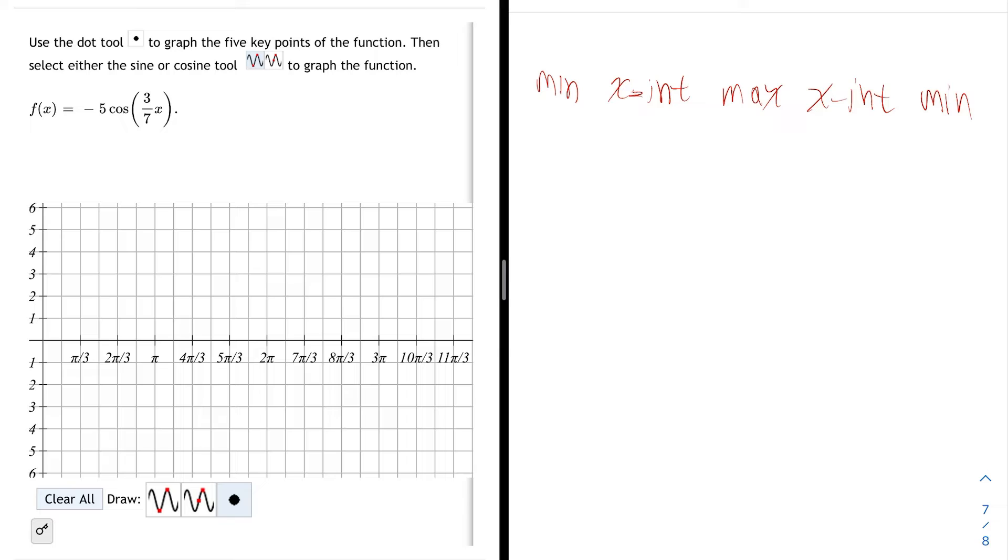The minimum of a cosine, the first one, occurs at 0. Then the x-intercept would be at π/2. Then the maximum would be at π. Then the next x-intercept would be at 3π/2. And the next minimum would be at 2π. That would be if it were just the cosine of x.